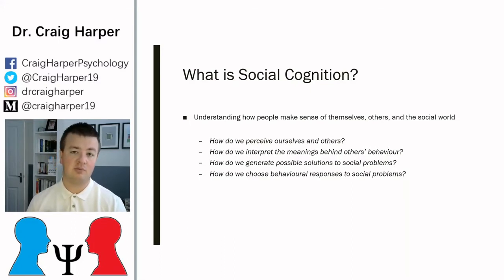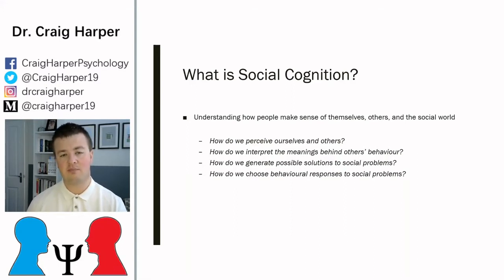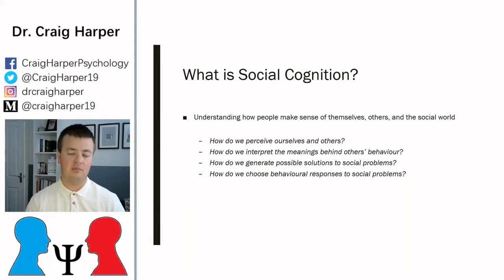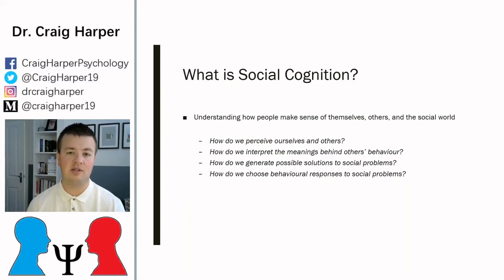How do we generate possible solutions to problems, and then how do we choose from those possible solutions which one is most appropriate for the situation? All of these are driven by schemas about the social world, our sense of self, and the attributions we make about other people — all rooted typically in unconscious cognitive processes.